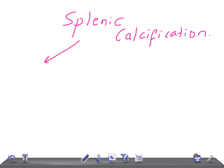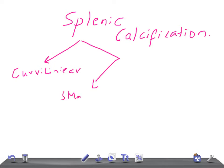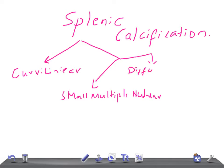We have different types based on the way in which the calcification has taken place. It can be curvilinear, multiple small nodular, diffuse homogeneous, granular, or solitary greater than one centimeter.